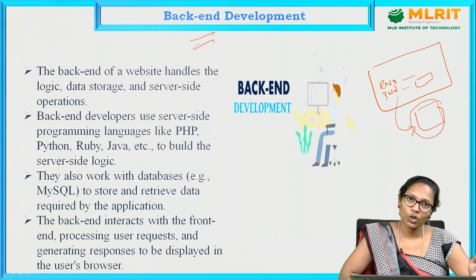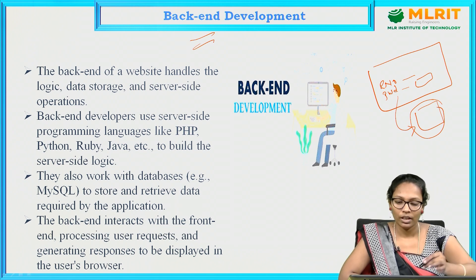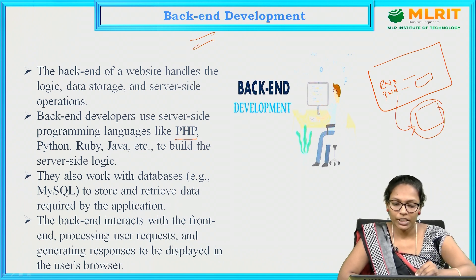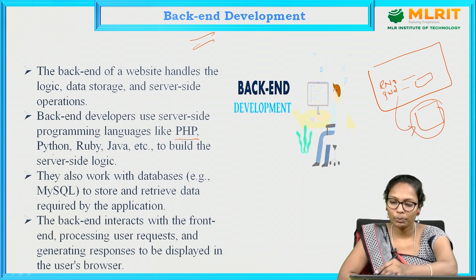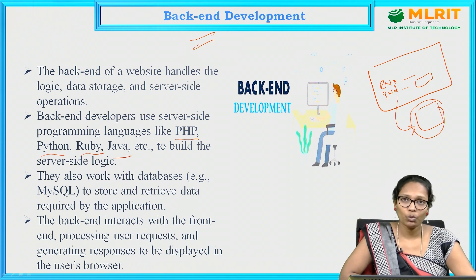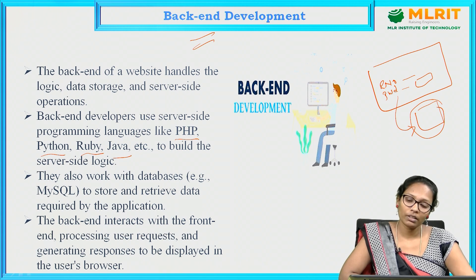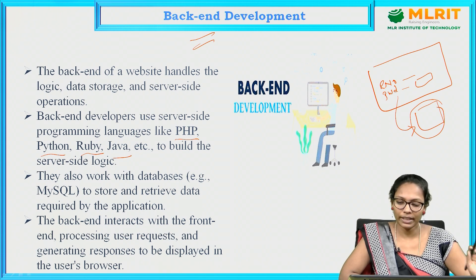For the back end, based on our requirement and application, we use different technologies. For example, PHP, Python, Ruby, Java, and so on. We have many back end development technologies and based on the requirement we use different languages.